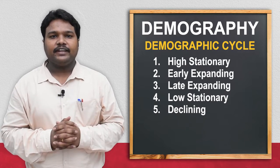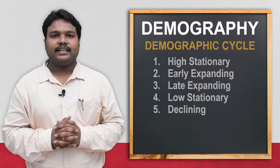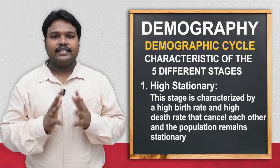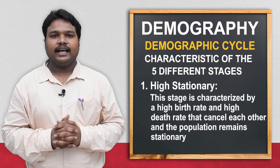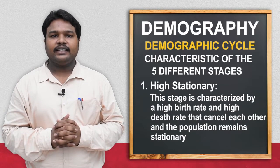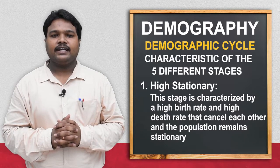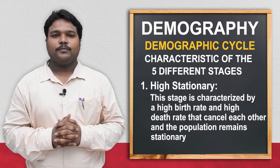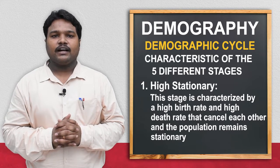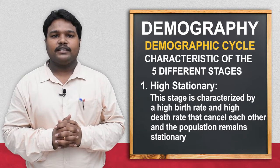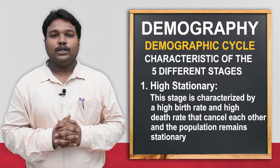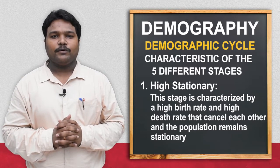In the high stationary stage, the birth rate is high, death rate is high, the demographic gap is narrow, population is stationary, and population composition is young — mostly youth are seen in the composition of the population.